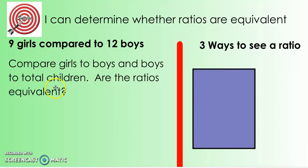So for instance, if I want to compare girls to boys and then boys to total children and I want to see if they are equivalent ratios, I would start off by creating my ratios. So let's do girls to boys. What ratio would you write?